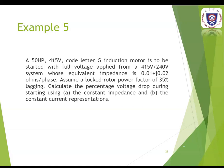Looking at Example 5: a 50 horsepower, 415 volt, code letter G induction motor is to be started with full voltage applied from a 415 volt to 240 volt system whose equivalent impedance is 0.01 plus j0.02 ohms per meter. Assume a locked rotor power factor of 35% lagging, so power factor is 0.35 lagging. We have to calculate the percentage voltage drop during starting using two methods: constant impedance and constant current.